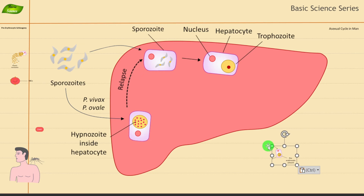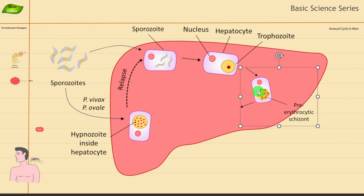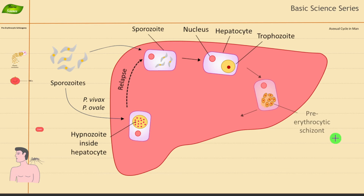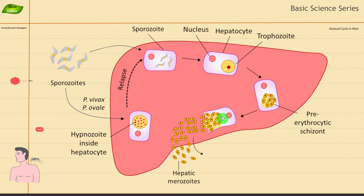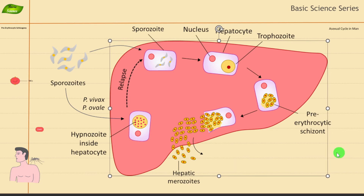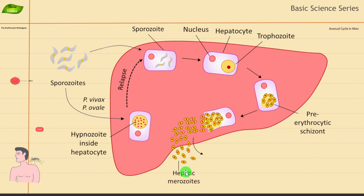The illustration clearly shows that nuclear division happens rapidly, and after that cell division occurs. This produces small merozoites that are inside the membrane-bound structure called the schizont. From there, a lot of merozoites get released by rupturing the hepatocytes. These are known as hepatic merozoites.